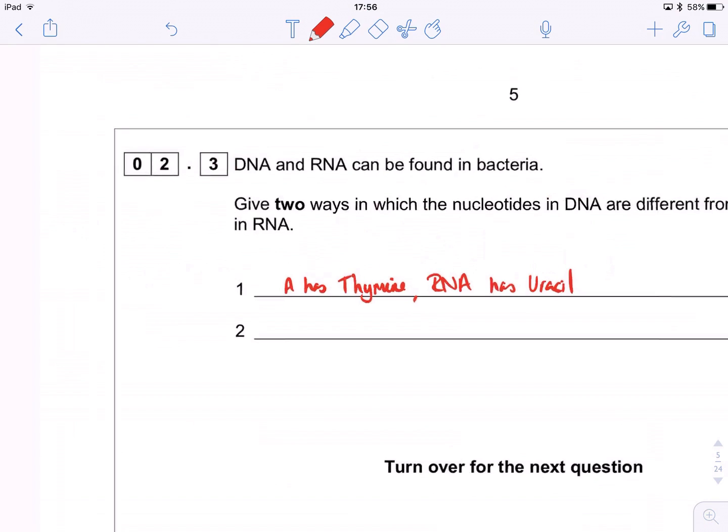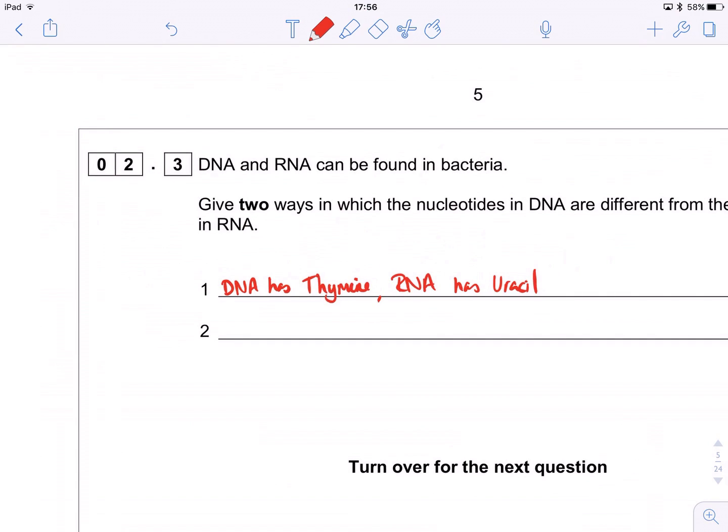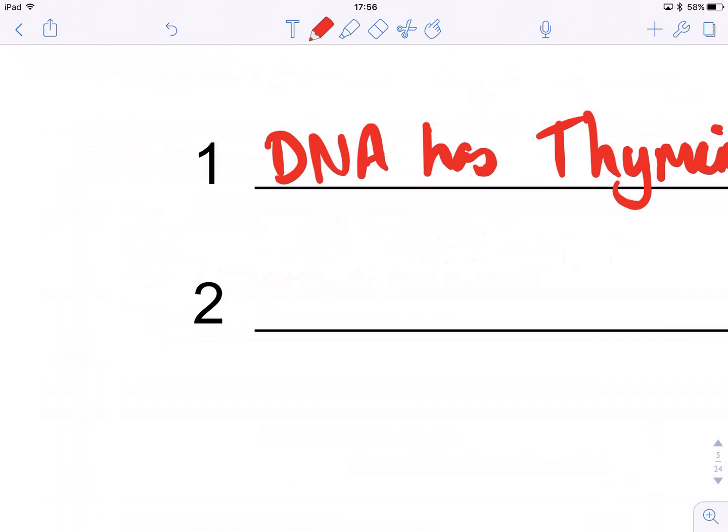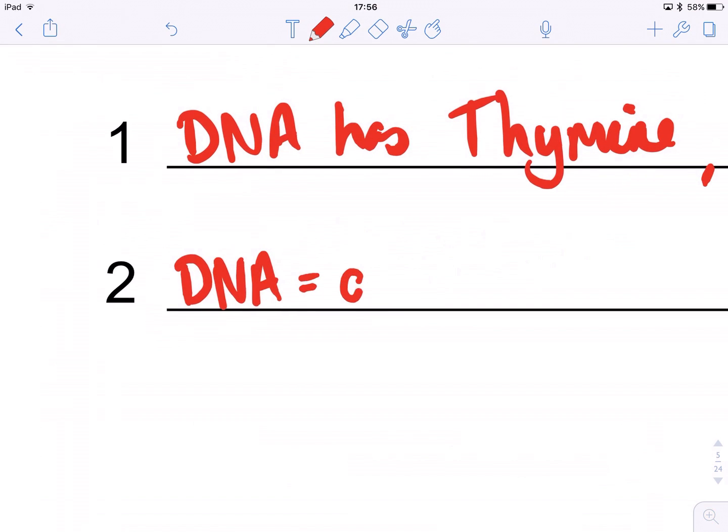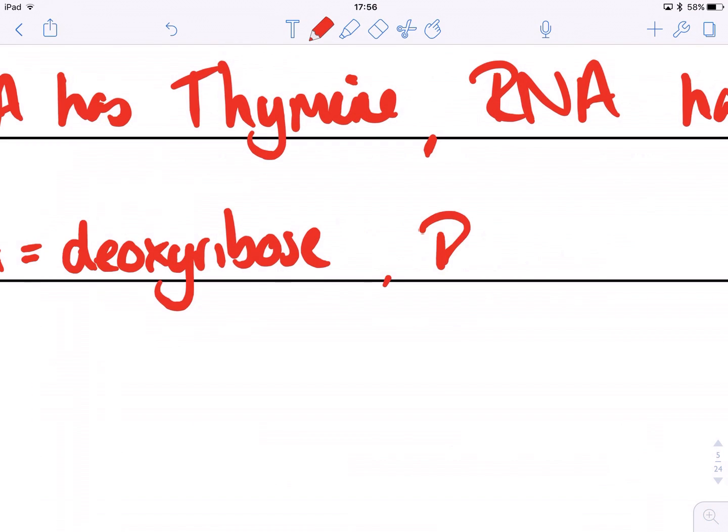And the second difference is that DNA, clues in the acronym, the initial here, DNA is deoxyribose as the sugar. So deoxyribose, whereas RNA is just ribose. Which is fine.